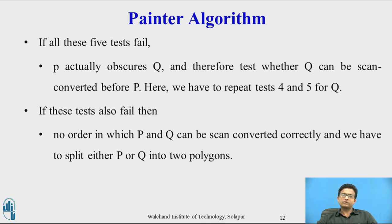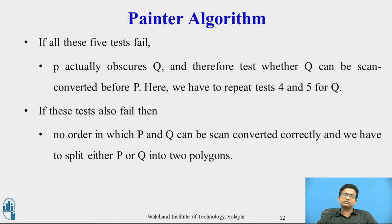Therefore, we check whether Q can be scan converted before P. We repeat tests 4 and 5 for polygon Q. If these tests also fail, then there is no order in which polygon P and polygon Q can be scan converted correctly, and we have to split either P or Q into two polygons.